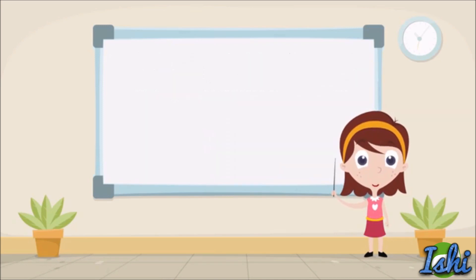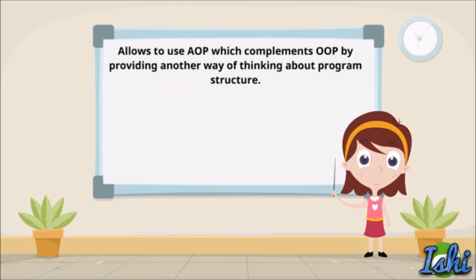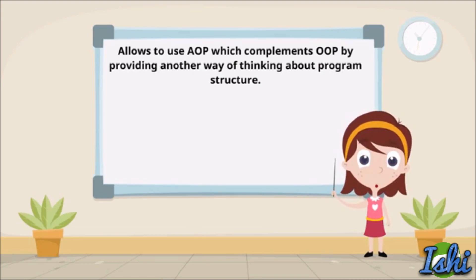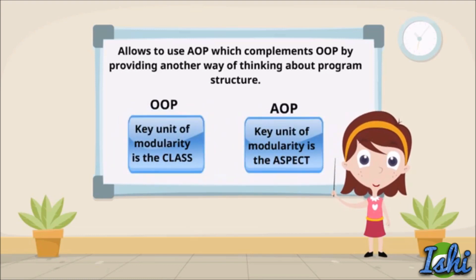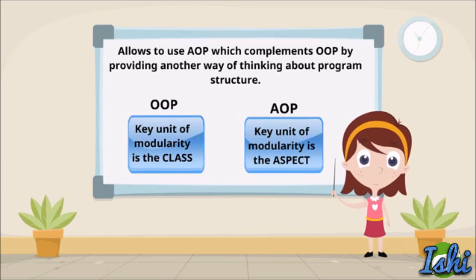Now let me draw your attention towards aspect-oriented programming. Spring allows aspect-oriented programming, which complements object-oriented programming by providing another way of thinking about program structure. In object-oriented programming, the key unit of modularity is the class, whereas in aspect-oriented programming, the key unit of modularity is the aspect.